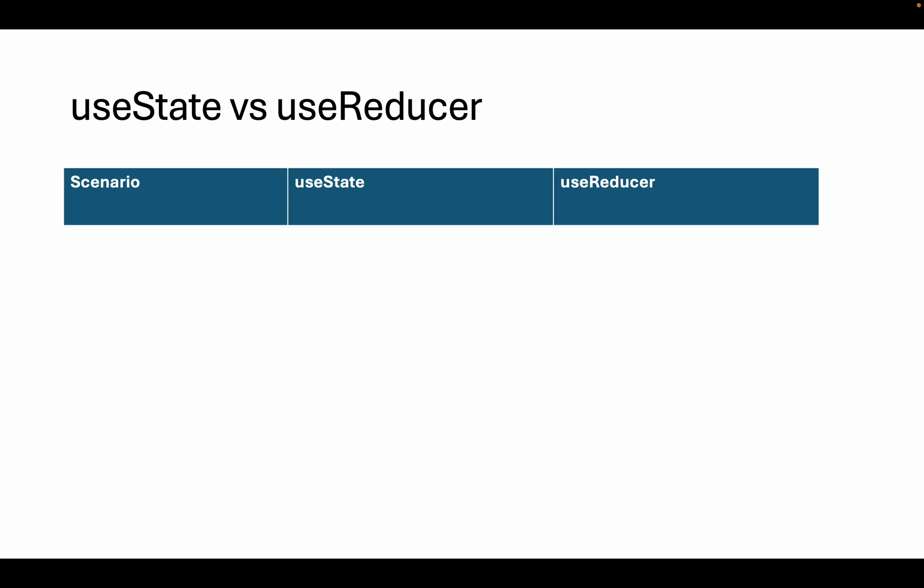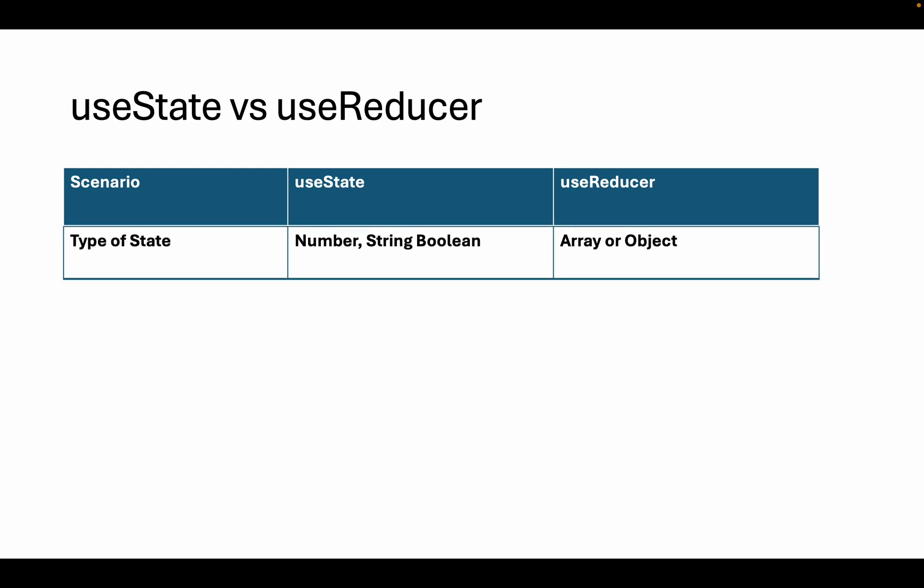Let's discuss a couple of scenarios. First, let's talk about the type of state. In case you are using primitive types like number, string, or boolean as state variables, it's better to use the useState hook. In case you are using arrays or objects, it's better to go with the useReducer hook.